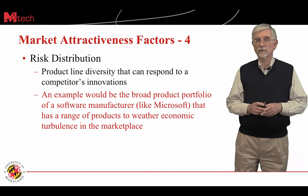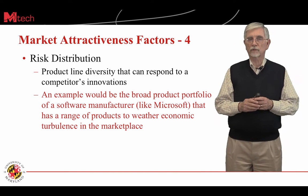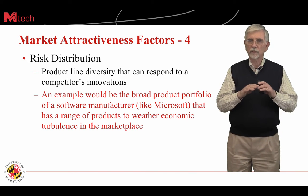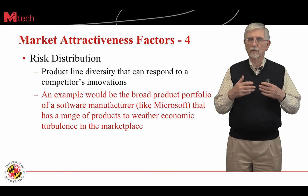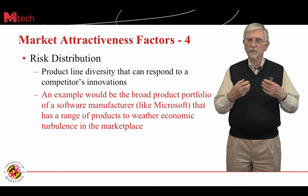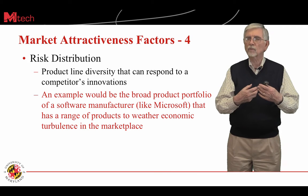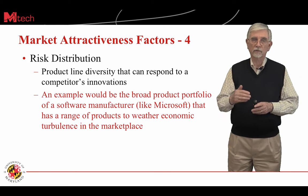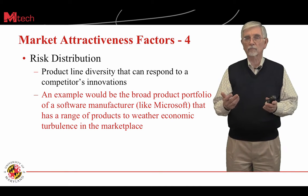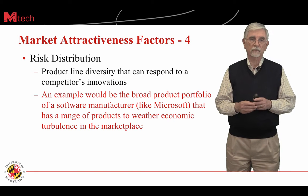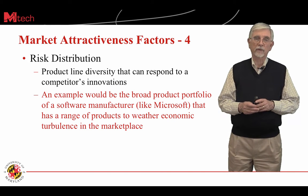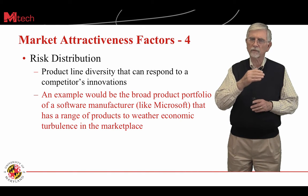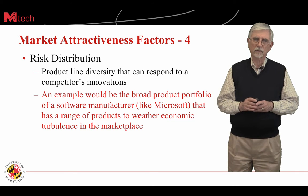Another market attractiveness factor is the degree to which risk is distributed. Sometimes you can have more than one product in your product line that spreads the sense of diversity and risk, making it more difficult for a competitor's innovation to respond to what you've done. A software manufacturer like Microsoft has a range of products that can weather economic and competitive turbulence in the marketplace.